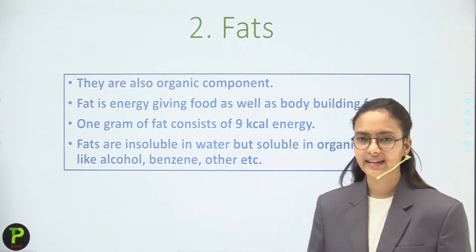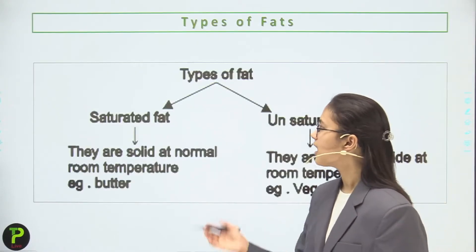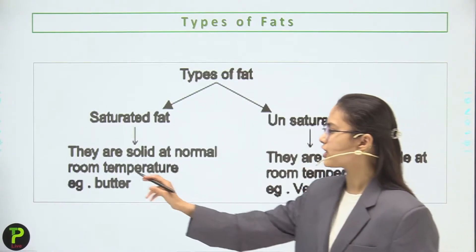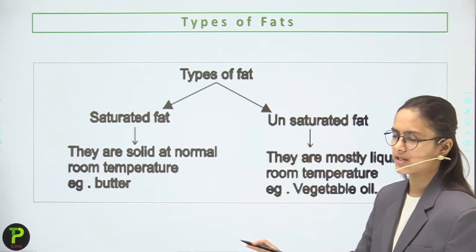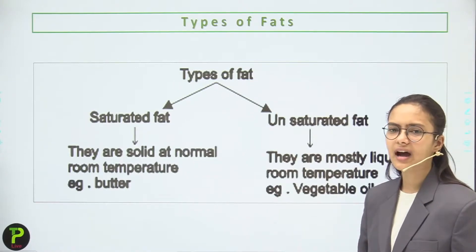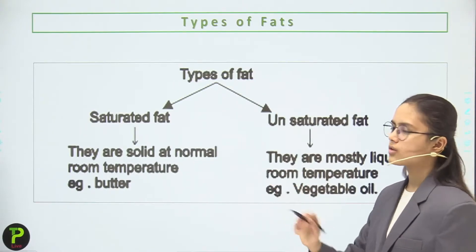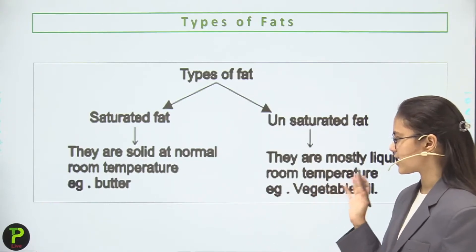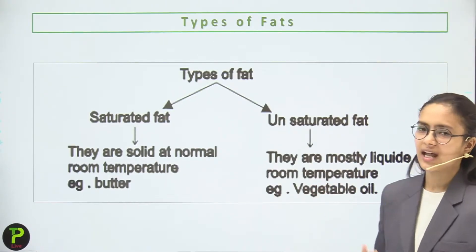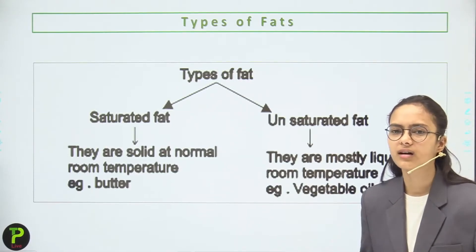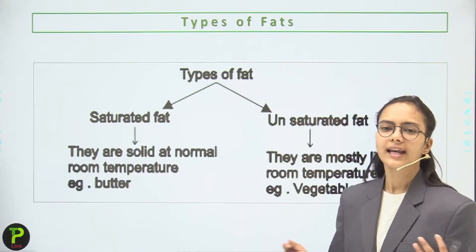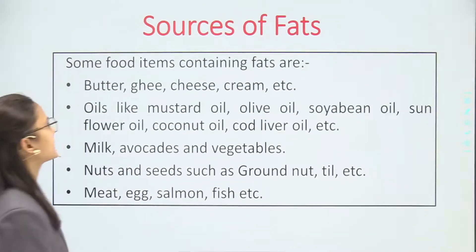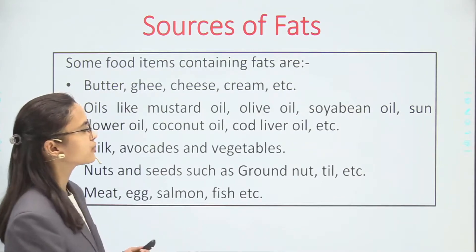There are two types of fats: saturated fats and unsaturated fats. Saturated fats are solid at normal room temperature — for example, butter and cheese are solid at room temperature and turn liquid when heated. Unsaturated fats are mostly liquid at room temperature, like vegetable oils.